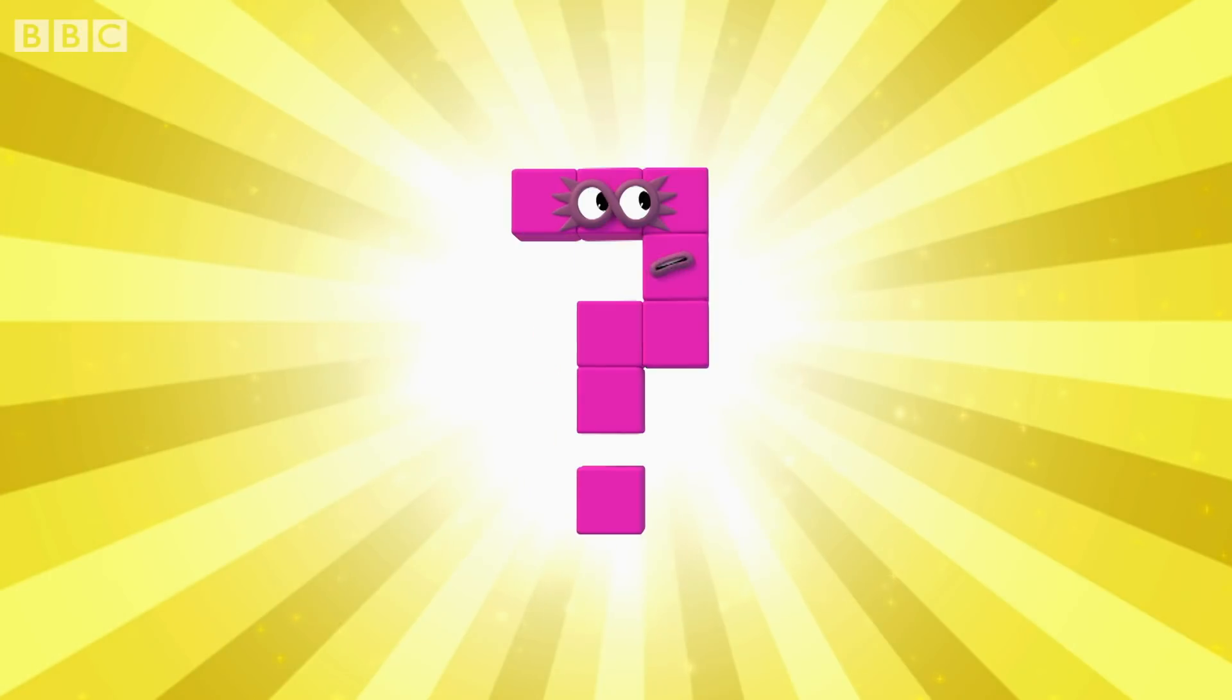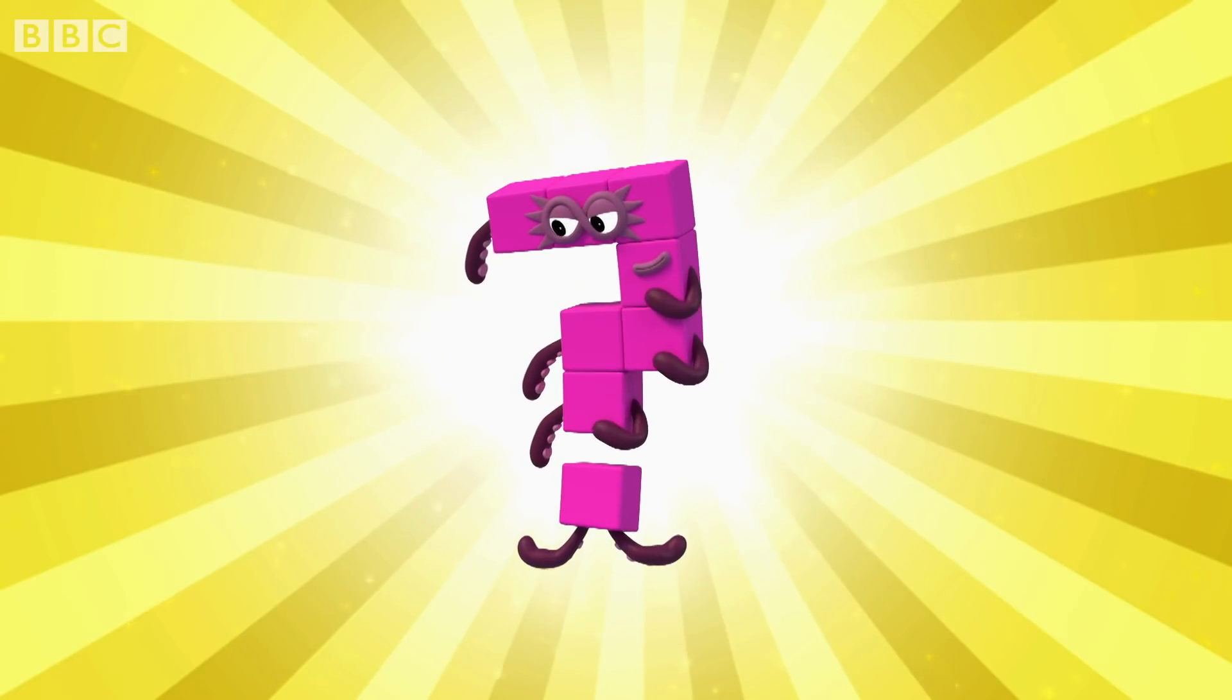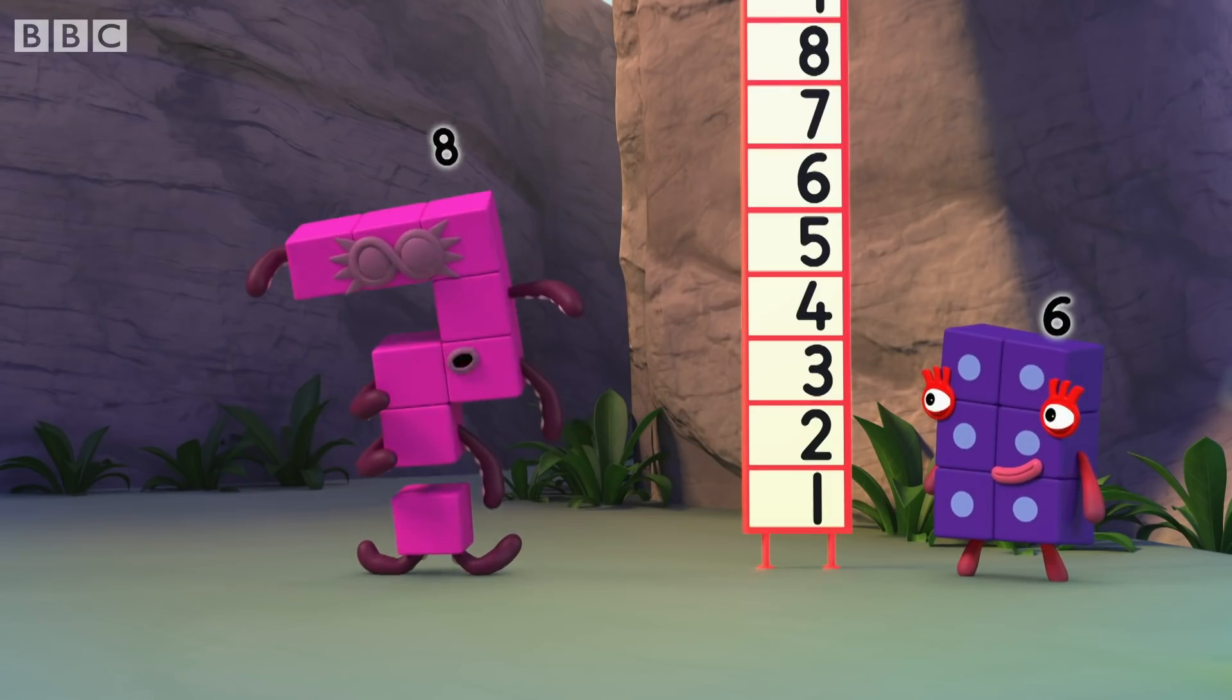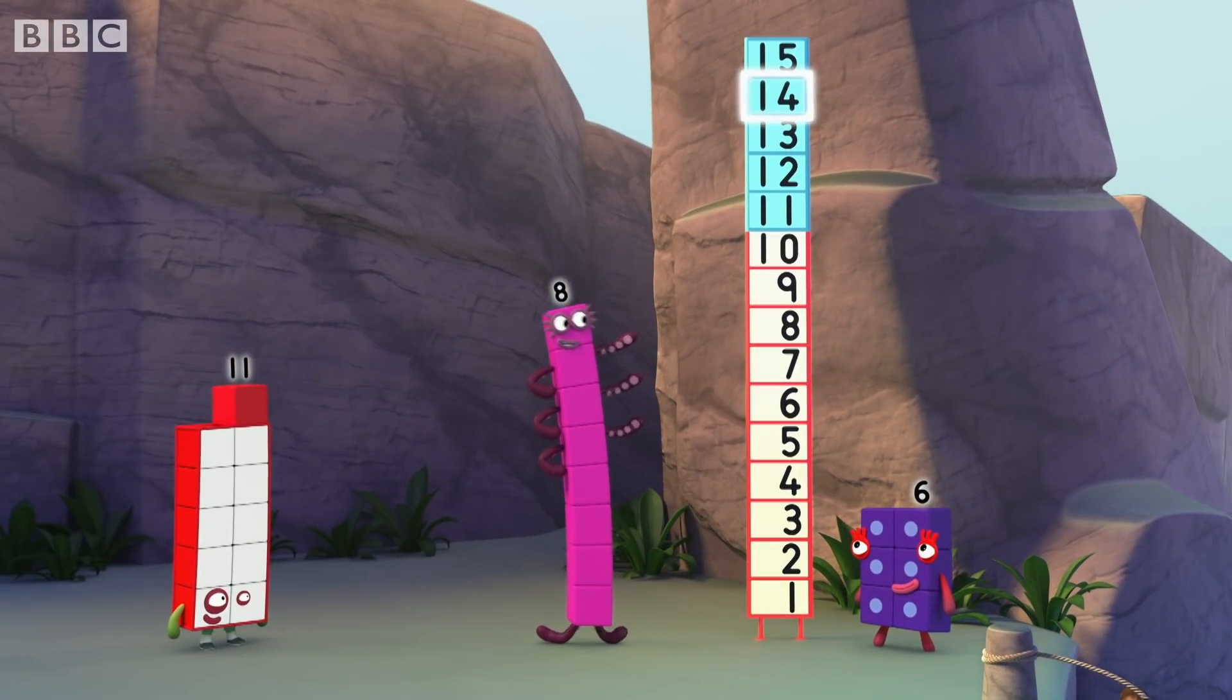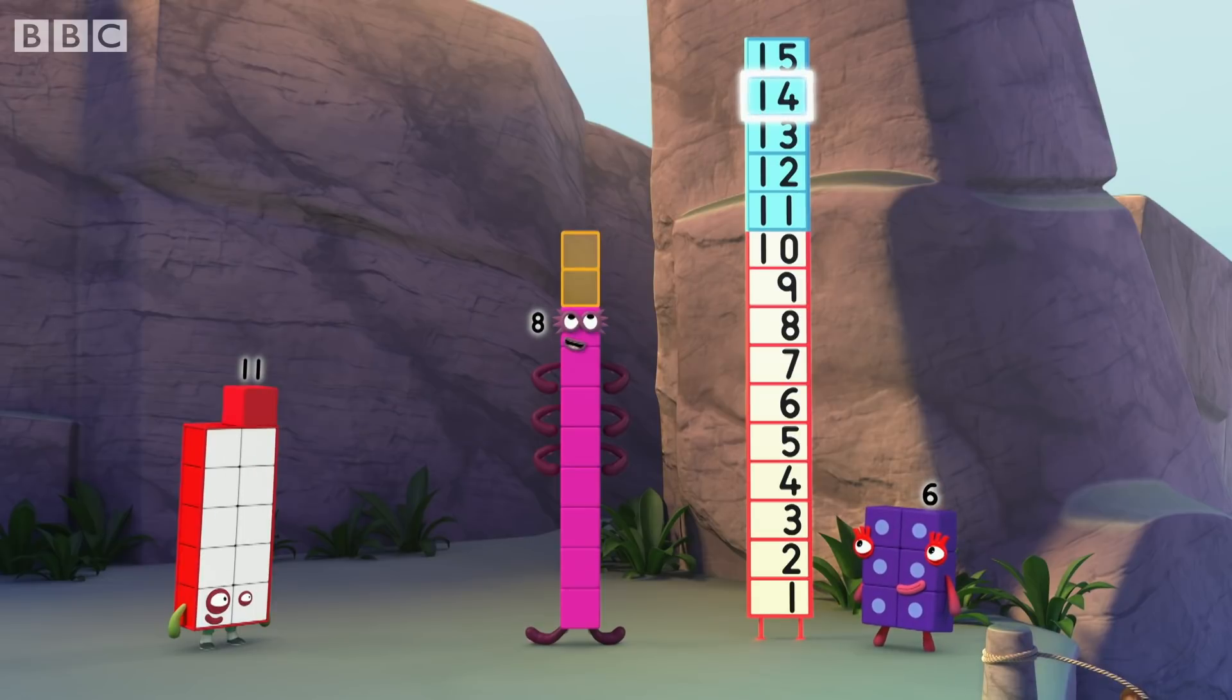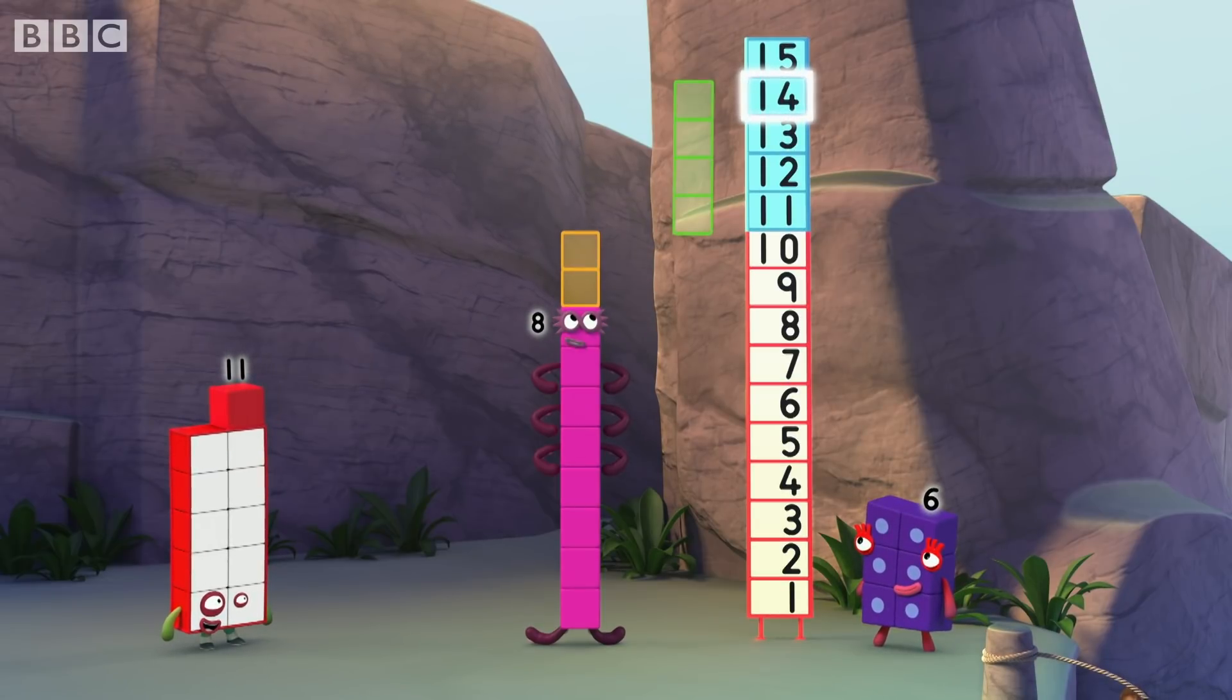Octoblock, think. One, two, three, four, five, six, seven, eight. Think. How do I get from eight to fourteen? Ha! From eight to ten takes two blocks. And fourteen is ten and four. So I need four blocks more.